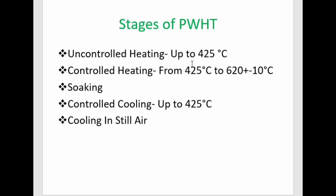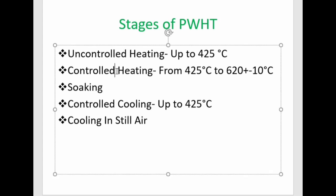Prior to moving into UCS-56, let's look at the stages of PWHT. PWHT is divided into five different steps. The first step is the uncontrolled heating process up to 425 degrees Celsius — that means up to 425°C there is no control on the rate of heating.